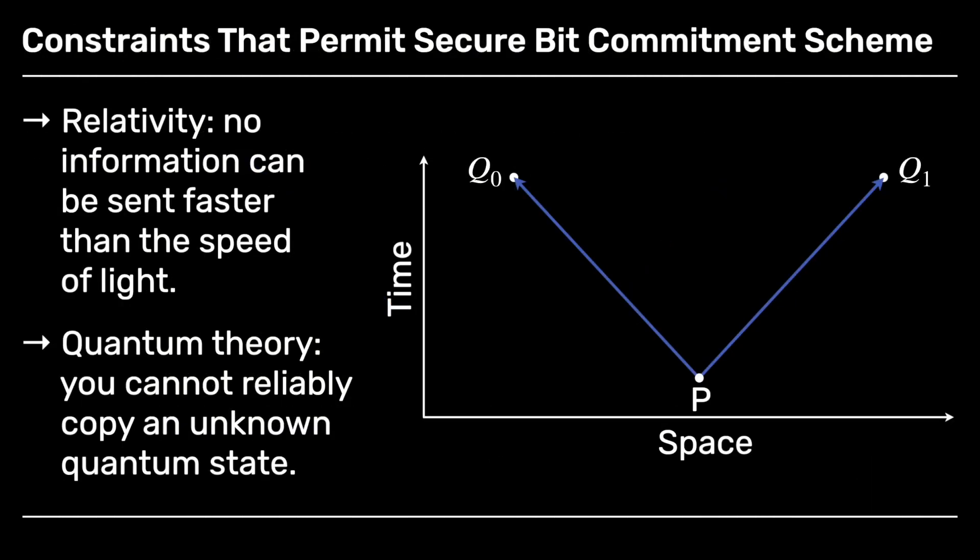Now let's remember what we've learned about the constraints on what you can do with information from relativity: you can't send any information faster than the speed of light. And from quantum theory, the no-cloning theorem told us you can't reliably copy an unknown quantum state. Both of these apply to Alice's situation here. She's given an unknown polarised state of light and can't send information faster than light. Although she can send it from P to Q0, if she changes her mind — she committed to 0 but wants to cheat and unveil 1 — she'd need to send it from Q0 to Q1, but that would be going faster than light. So she can't cheat by committing to 0 and then unveiling 1.